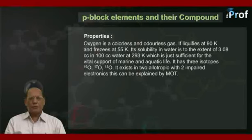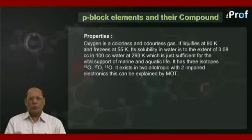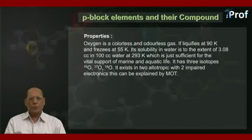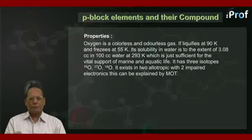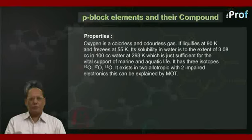Oxygen exists in 2 allotropic forms: O2 and O3, that is ozone. The O2 molecule is paramagnetic with 2 unpaired electrons, which can be explained by Molecular Orbital Theory (MOT).